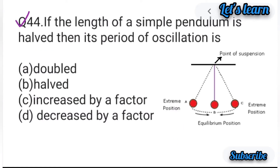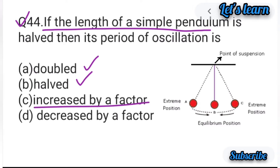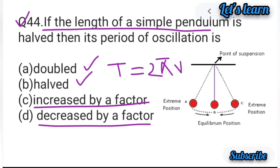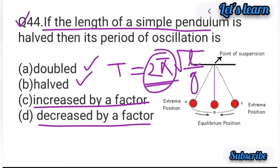Question number 44: If the length of a simple pendulum is halved, then its period of oscillation is — simple pendulum का length half हो जाए तो period of oscillation में क्या change होगा? Options: double, half, increased by a factor, या decreased by a factor। यहाँ पर एक formula याद रखना होगा — formula for the time period of an ideal simple pendulum: T = 2π√(L/g), जहाँ T = time period, L = length, और g = acceleration due to gravity।